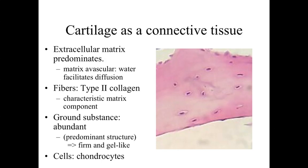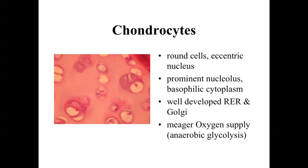Looking at the chondrocytes — the cartilage cells — they tend to be round, maybe slightly oval cells with an eccentric nucleus that is usually not centrally located but pushed off to the side. The nucleus has a prominent nucleolus, and the cytoplasm is basophilic with a well-developed rough endoplasmic reticulum and Golgi apparatus. These characteristics — prominent nucleolus, well-developed RER, and Golgi — are classic of a cell involved in synthesis and secretion of proteins, which is exactly what chondrocytes do in producing the extracellular matrix materials.